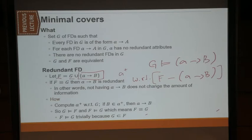That's the reasoning behind the two algorithms we have: the attribute closure and the minimal cover.